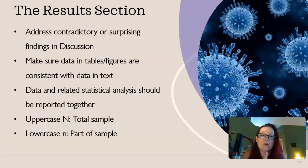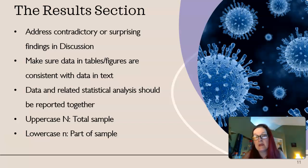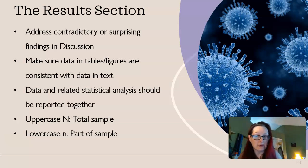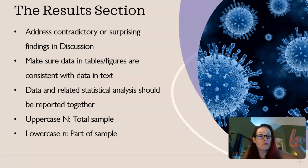Make sure you're addressing any surprising or contradictory findings — you're not going to do that in results, you're going to do it in discussion, but make sure you're doing it. Make sure the data in your tables and figures are consistent with the data in the text — that sounds obvious, but you'd be surprised how often people don't do it. Data and related statistical analysis should be reported together — that's very clear and straightforward so it doesn't get confusing. Use an uppercase N for the total sample and a lowercase n for a part of the sample.